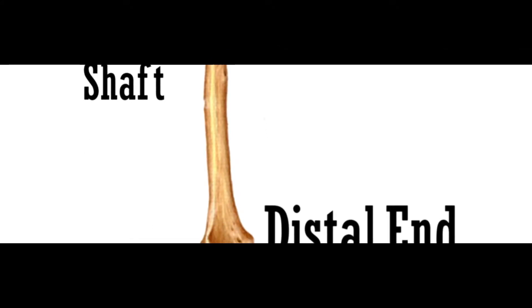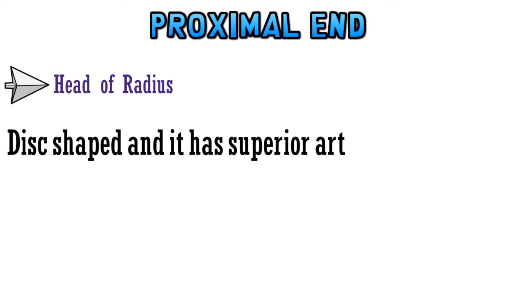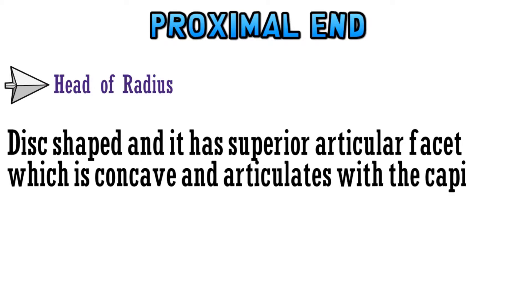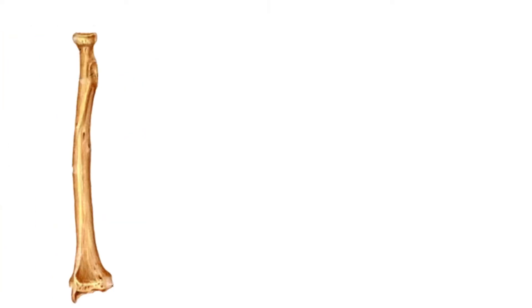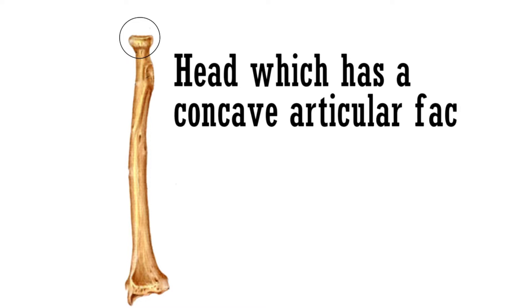Let's discuss what anatomical structures these parts have, taking the proximal end first. The first anatomical structure is the head of the radius. It is disc-shaped and has a superior articular facet which is concave and articulates with the capitulum of the humerus.